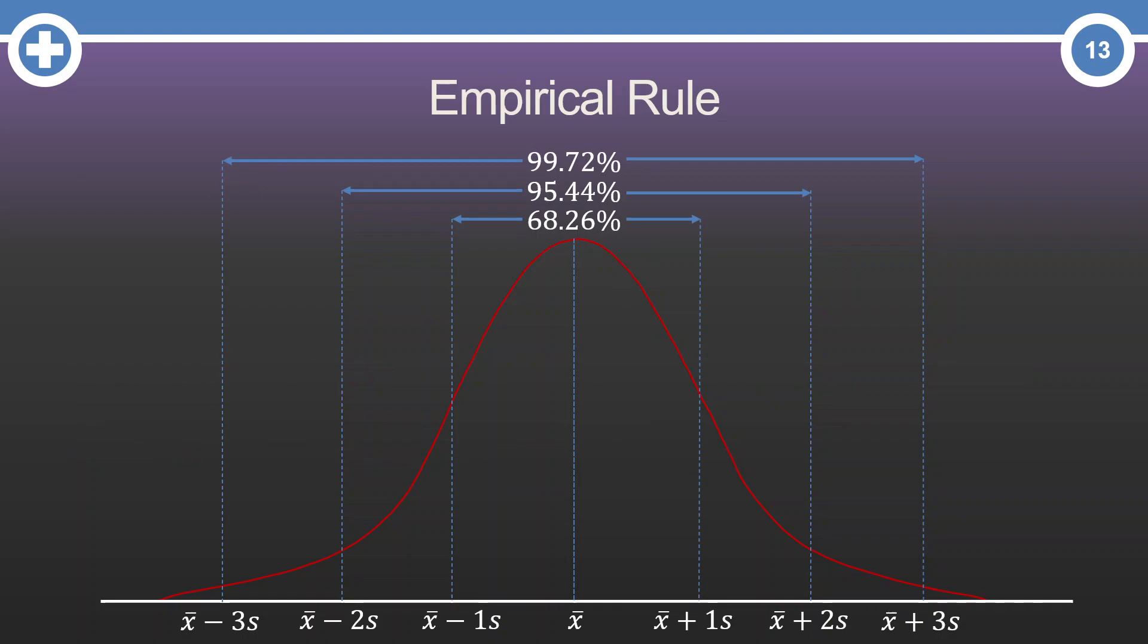Using the normal, or Gaussian, distribution, we have the following property called the empirical rule. The empirical rule states that approximately 68% of the data is within one standard deviation of the average, approximately 95% of the data is within two standard deviations, and approximately 99.7% of the data is within three standard deviations.